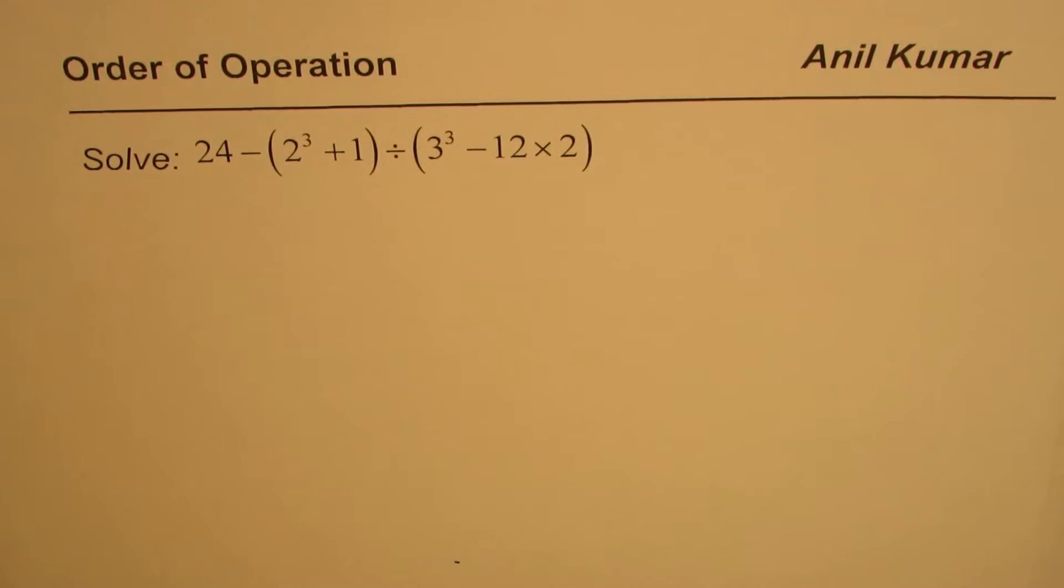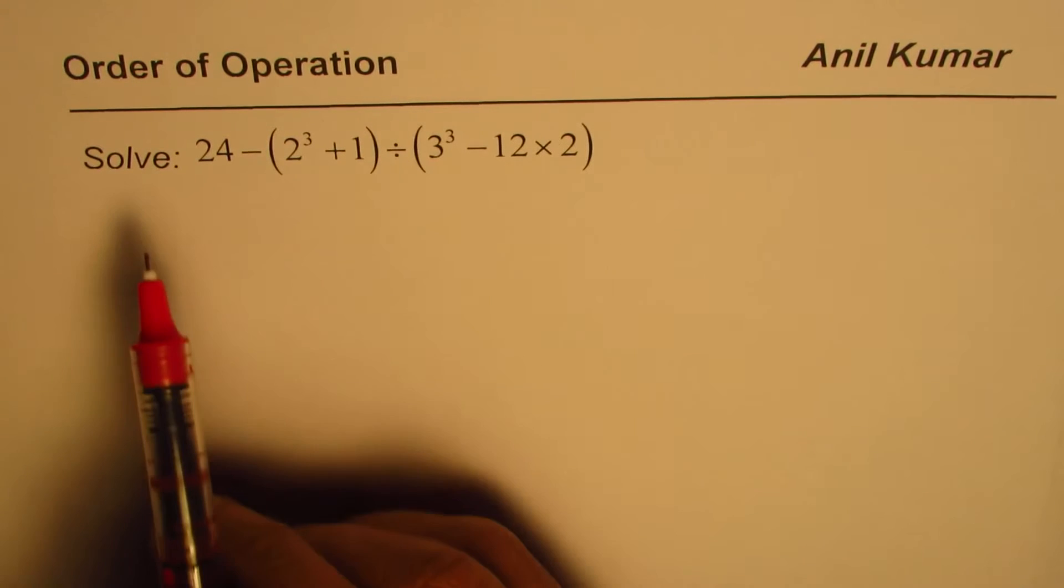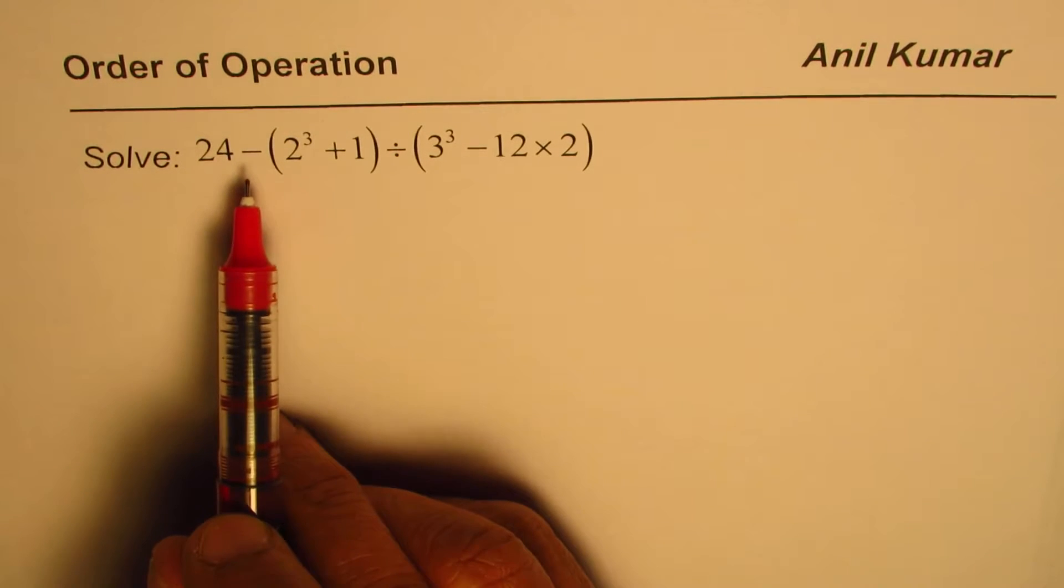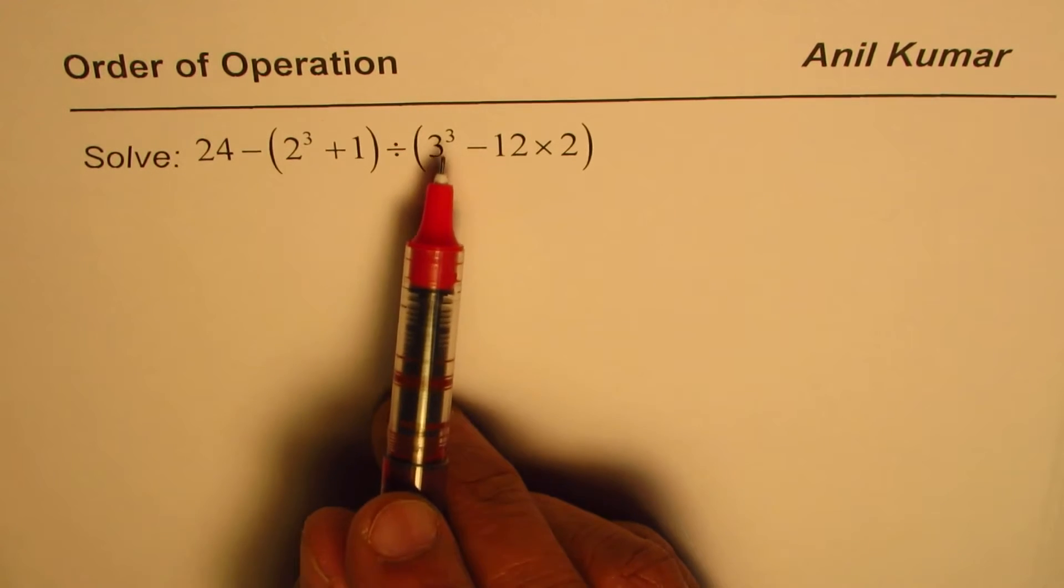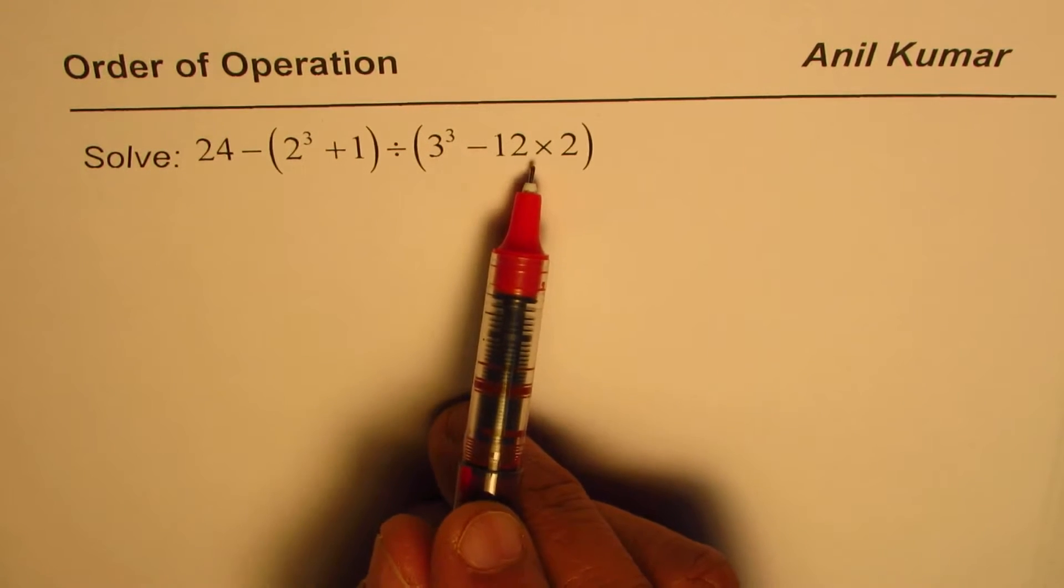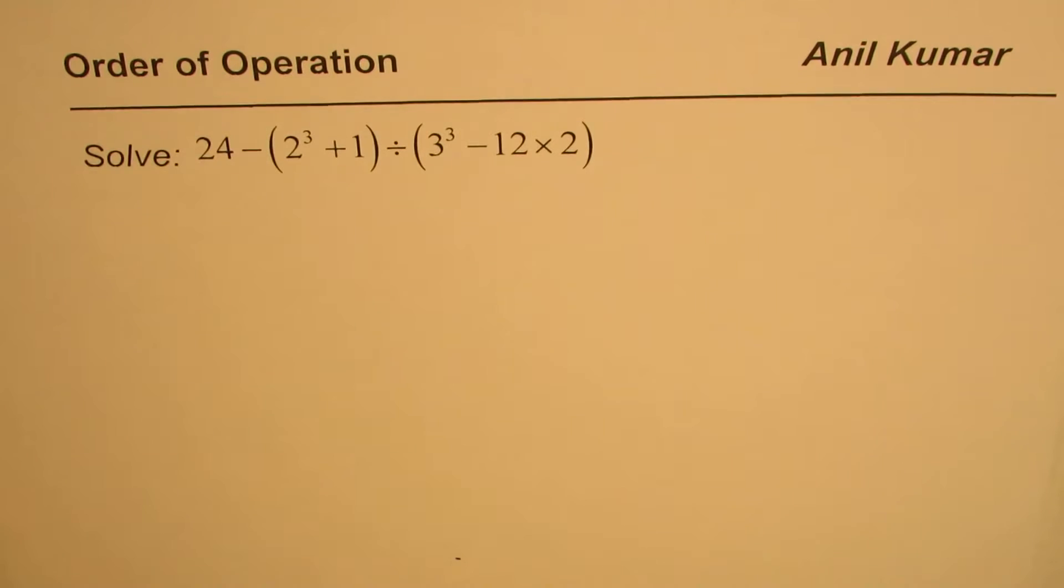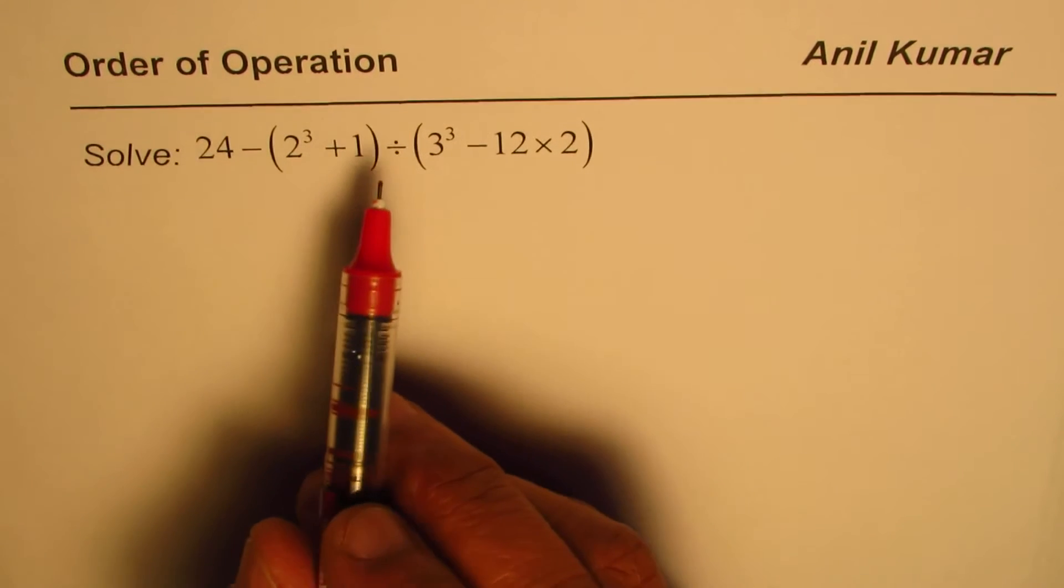I'm Anil Kumar and here is a question on order of operation. You need to solve 24 minus 2 cube plus 1 divided by 3 cube minus 12 times 2. Order of operation is that you have to first do the brackets.